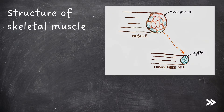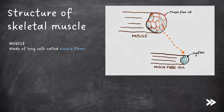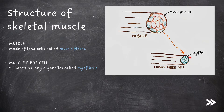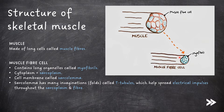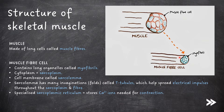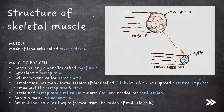The specification wants us to know the gross and microscopic structure of skeletal muscle, as well as the ultra-structure of a myofibril. Note that ultra-structure refers to a very small structure, which can usually only be seen using a very powerful microscope, such as an electron microscope. On the gross scale, we have the muscle, which is made up of long cells called muscle fibres. Within a single muscle fibre cell, we have long organelles called myofibrils. The cytoplasm of a muscle fibre cell is known as the sarcoplasm. We have a cell membrane called the sarcolemma, which has many invaginations — i.e. folds — called T-tubules, which help spread electrical impulses throughout the sarcoplasm and fibre. Muscle fibre cells contain specialised sarcoplasmic reticulum that stores calcium ions needed for contraction. They also contain many mitochondria. Muscle fibre cells are multi-nucleate, i.e. they contain more than one nucleus, as they are formed from the fusion of multiple cells.